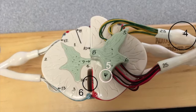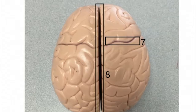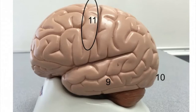Number six, name this division between the white matter. Number seven, name this sulcus. Number eight, name this fissure. Number nine, name this region of the brain. Number ten, name this region of the brain.